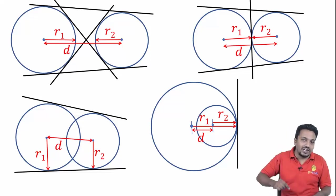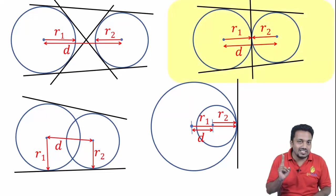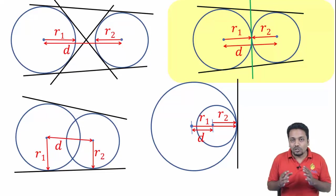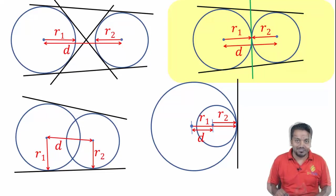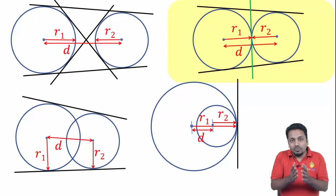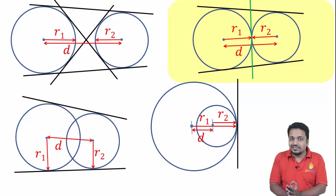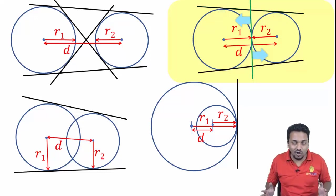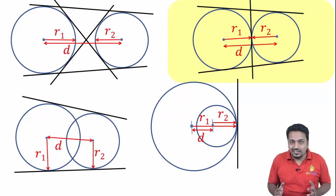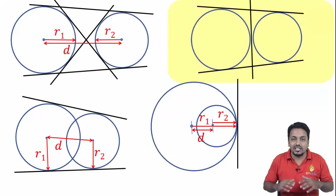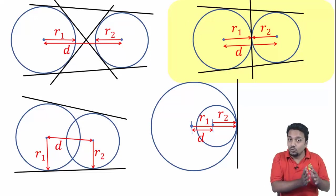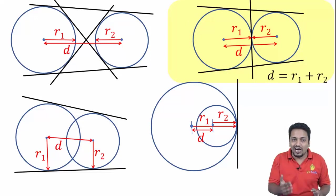Starting with the case of three common tangents: two direct common tangents (also called external common tangents) and one transverse common tangent (also called an internal common tangent). Circles lie on the same side of direct common tangents and on opposite sides of transverse common tangents. This case of three common tangents occurs when the circles simply touch each other externally, which happens when the distance between the centers equals the sum of the two radii: D equals r1 plus r2.